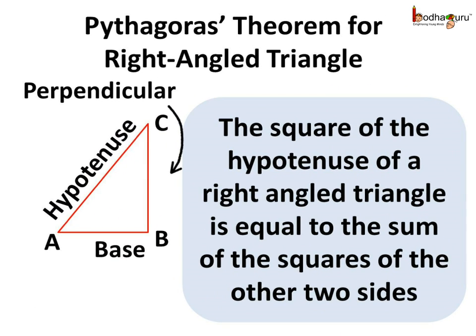This is what Pythagoras theorem explains — the relation between the sides of the right angle triangle. The Pythagoras theorem says the square of the hypotenuse of a right angle triangle is equal to the sum of the squares of the other two sides. So according to it, the hypotenuse squared is equal to base squared plus perpendicular squared.